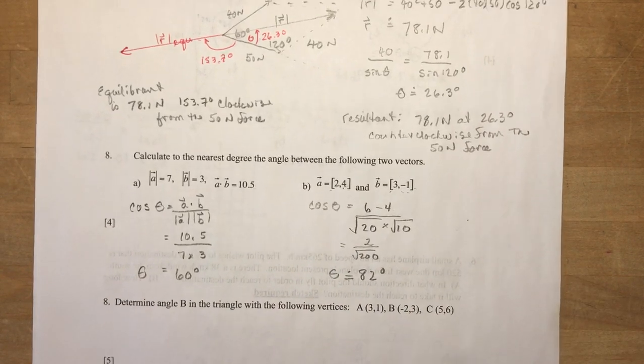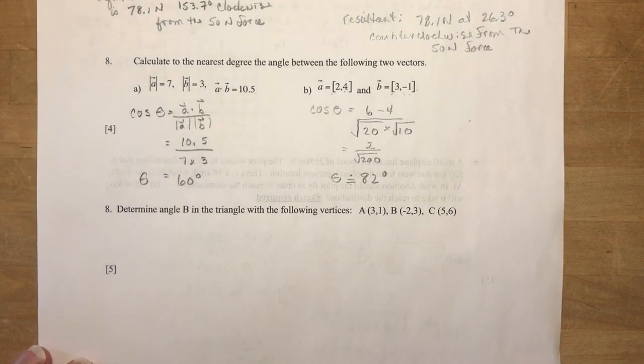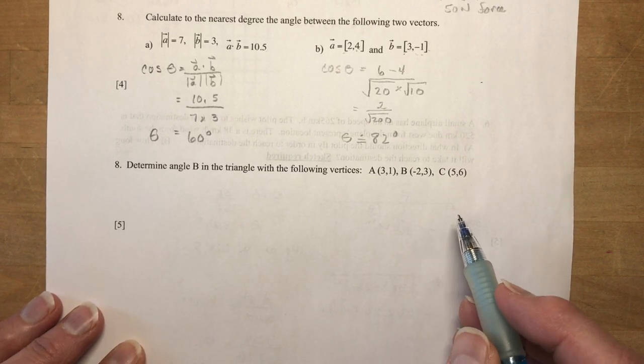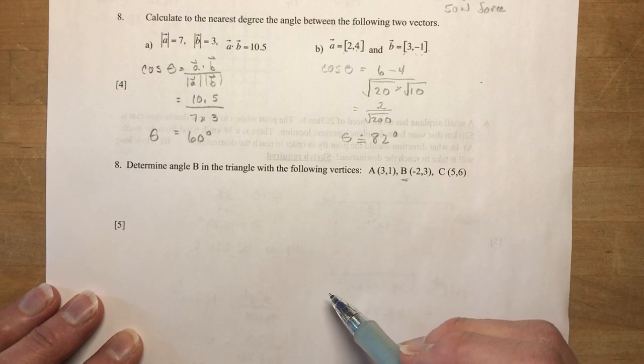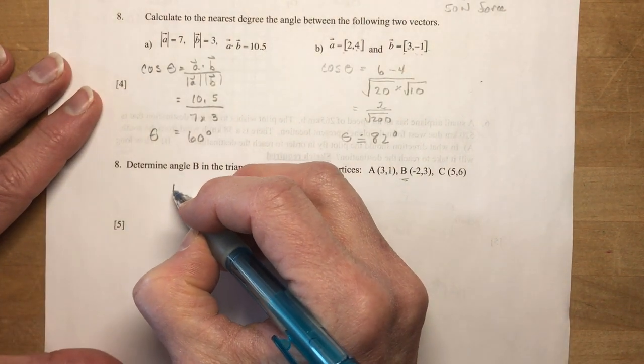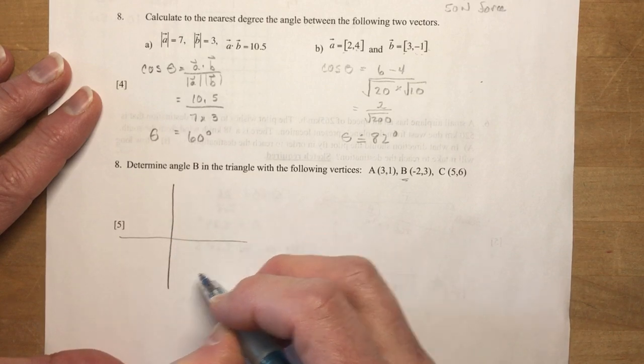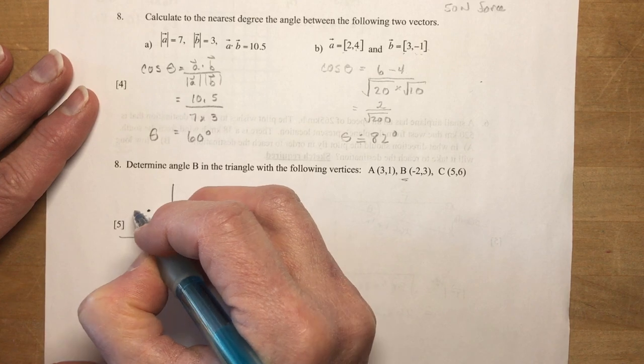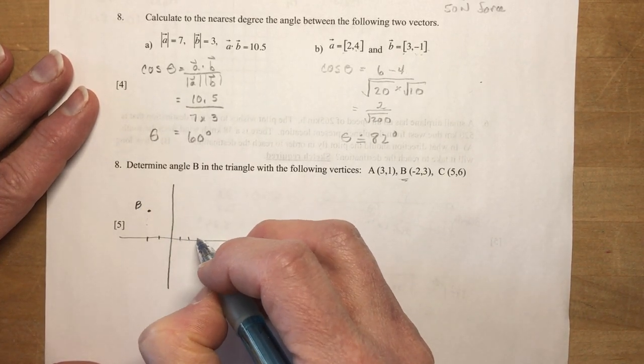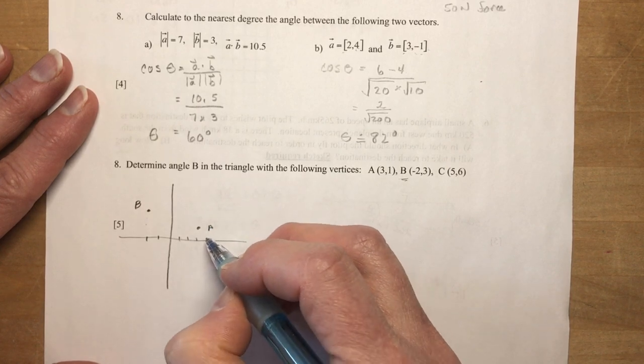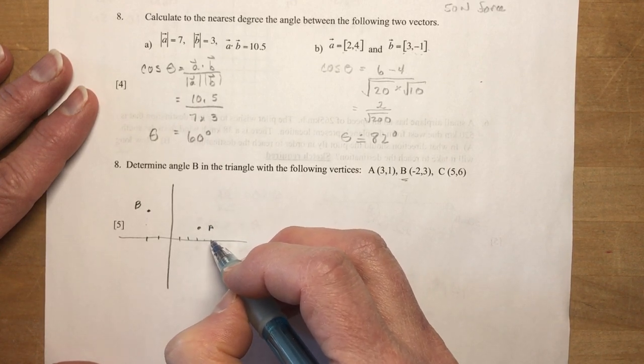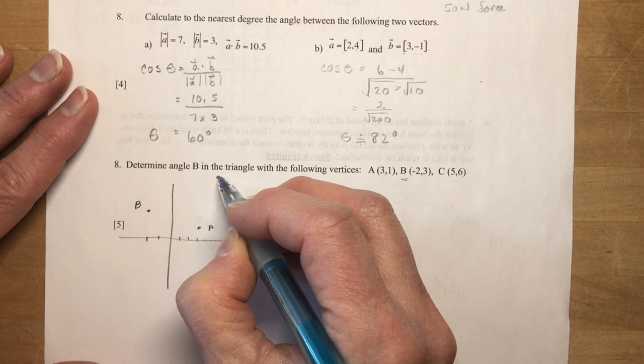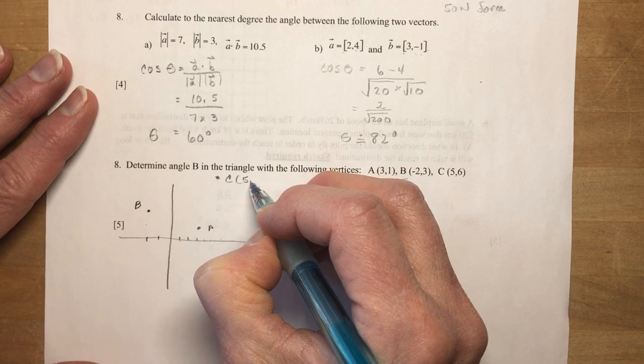Okay, so there's an application of your dot product. That's right. Determine angle B in the triangle with the following vertices. Okay, so in order for me to find angle B, I need to position it. So I'm going to make a really quick sketch here, just so you see what I'm talking about. So I have minus 2 and 1, 2, 3. That's B. I have 3, 1, 2, 3 and 1. That's my A. And C is 3, 4, 5, 4, 5 and 1, 2, 3, 4, 5, 6. So something like this. C 5, 6. Here's my A.